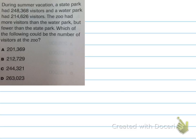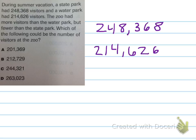So now they're asking me which of the following could be the number of visitors at the zoo. So really, I'm looking for a number that's between 248,368 and 214,626. So let's go through these options and see what can go in between these numbers.